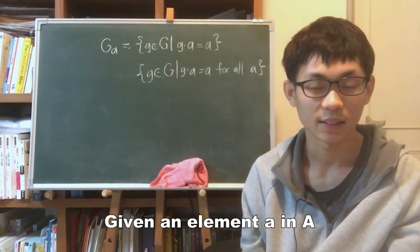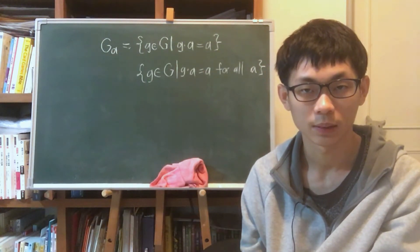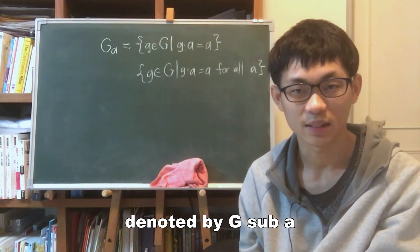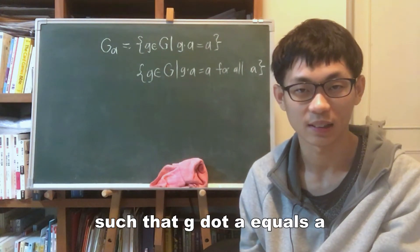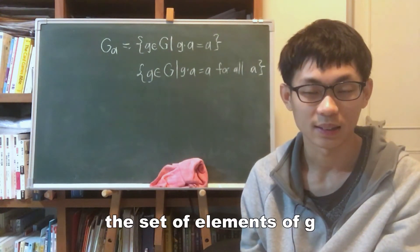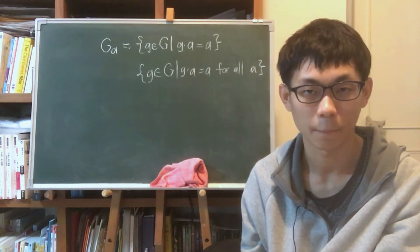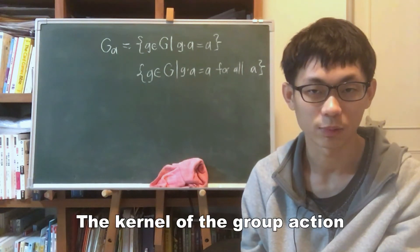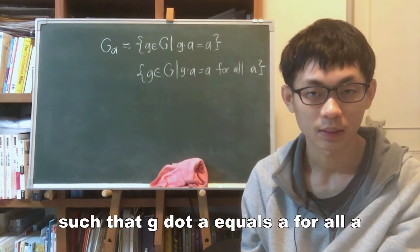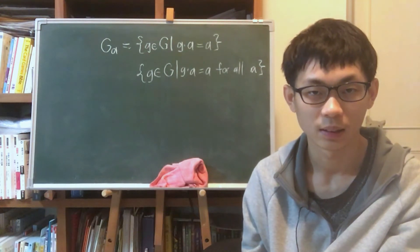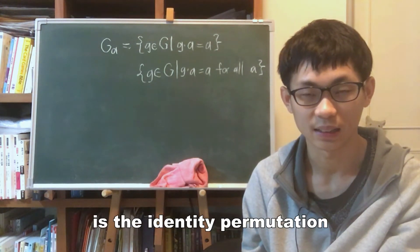Given an element a in A, the stabilizer of a in G, denoted G_a, is the set of g in G such that g · a = a — that is, the set of elements of G such that σ_g fixes a. The kernel of the group action is the set of g in G such that g · a = a for all a; that is, the set of elements of G such that σ_g is the identity permutation.